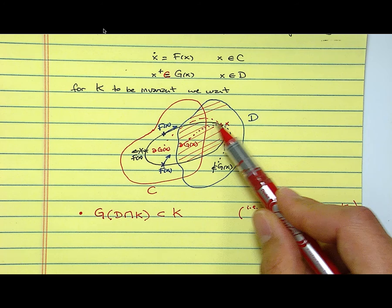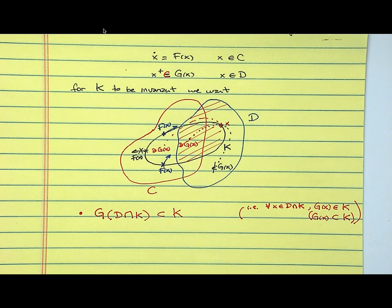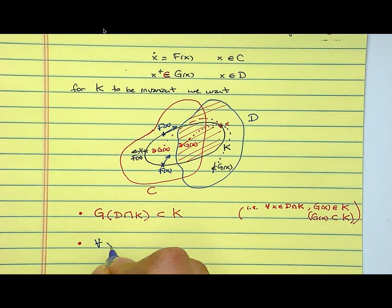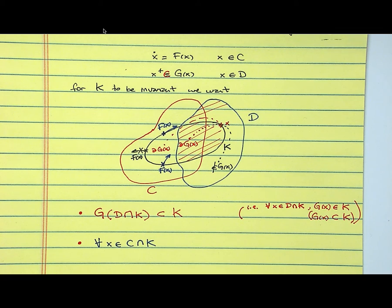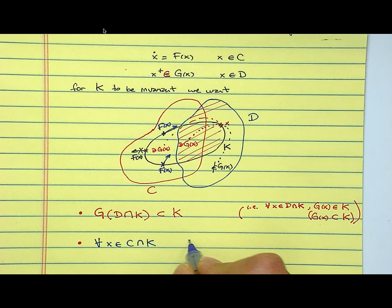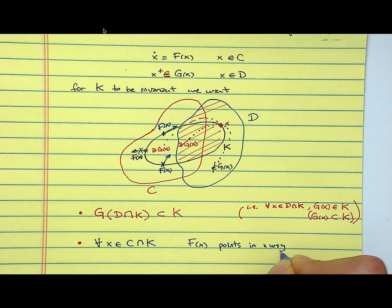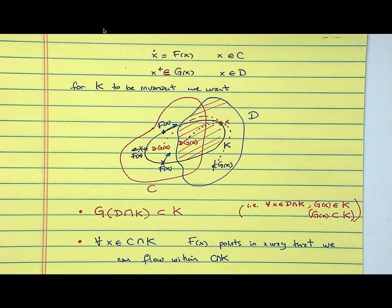So this is for the jumps. Notice that I did an analysis here only where X belongs to D, but also holds when you are inside, otherwise you can have jumps out. For the flows, what we would like to have is that for every x in C intersected with K, we have f of x points in a way that we can flow within C intersected with K.